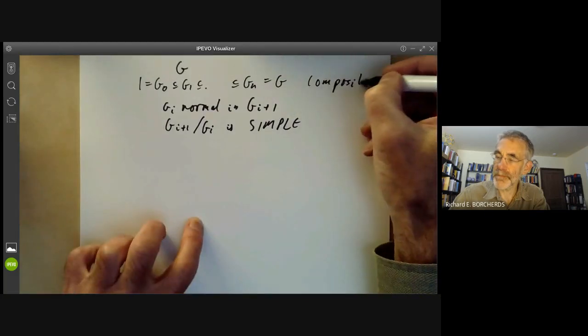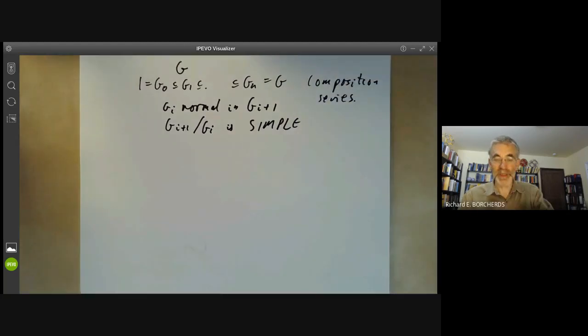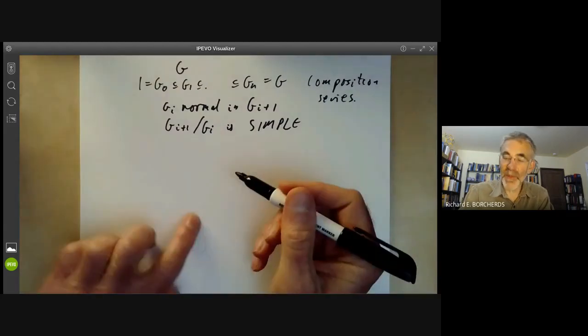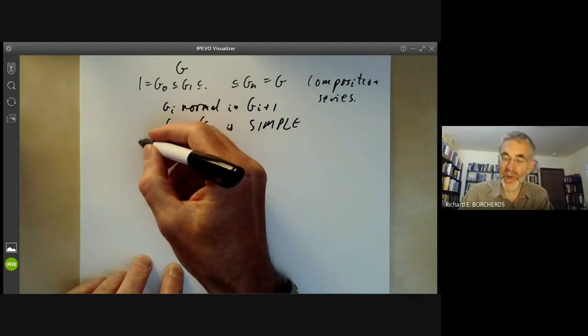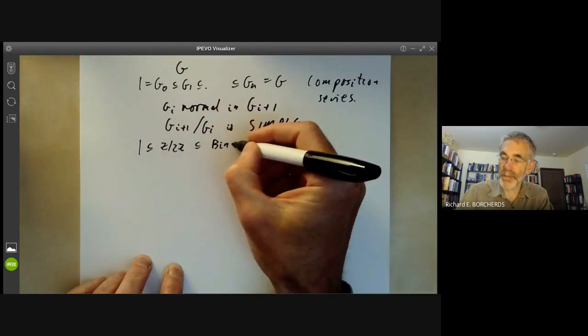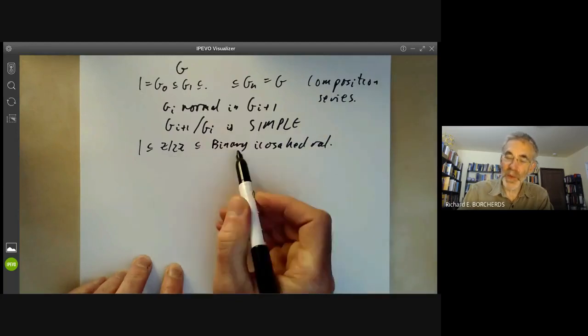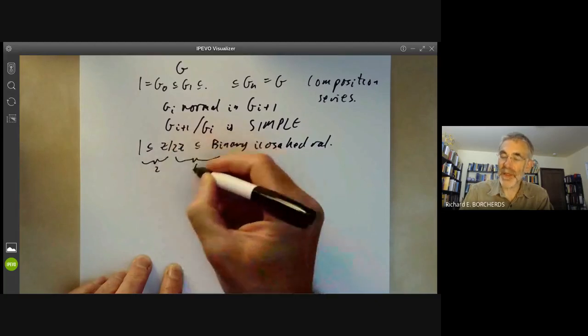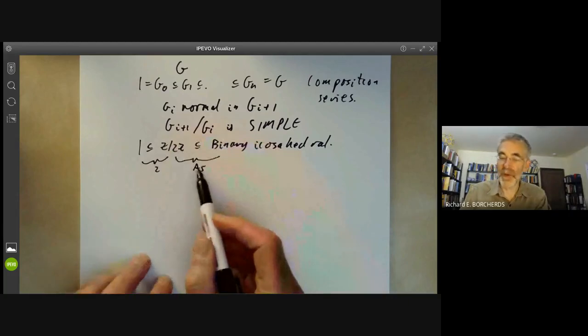We can give some examples of composition series. From the previous lecture, we studied several groups of order 120, and these have composition series as follows. If we take the binary icosahedral group, then it has a composition series that looks like this. And the composition factors, which mean these quotients, this factor is obviously a group of order two. And this group is the group of rotations of an icosahedron or the equivalent of the group A5.